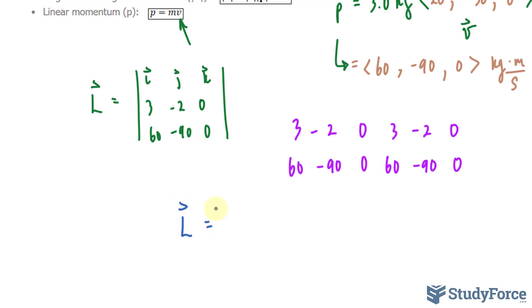To find the x, y, and z components, we follow this pattern. Negative 2 times 0 makes 0, and 0 times negative 90 makes 0. You subtract those two values, which results in 0. That's the x component of angular momentum. Now let's try again. 0 times 60 makes 0, and 0 times 3 makes 0 again. You subtract those and end up with 0 as your y component.